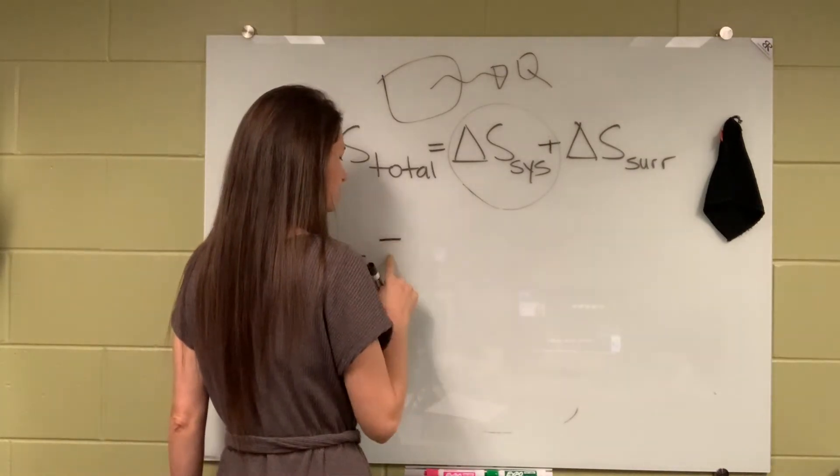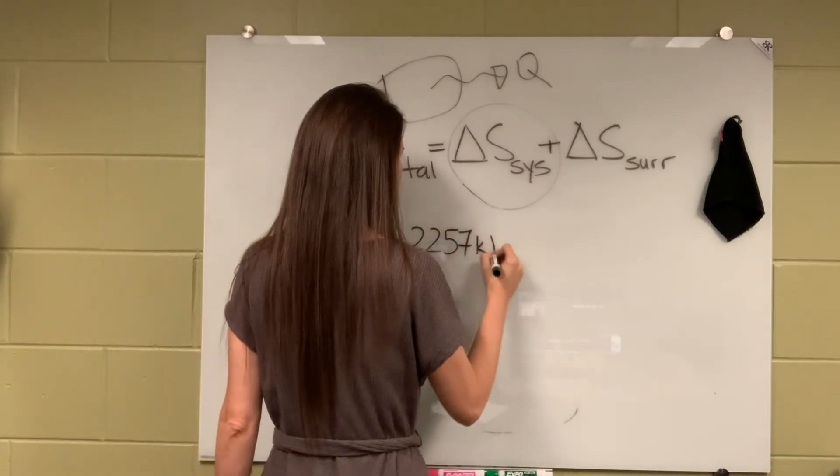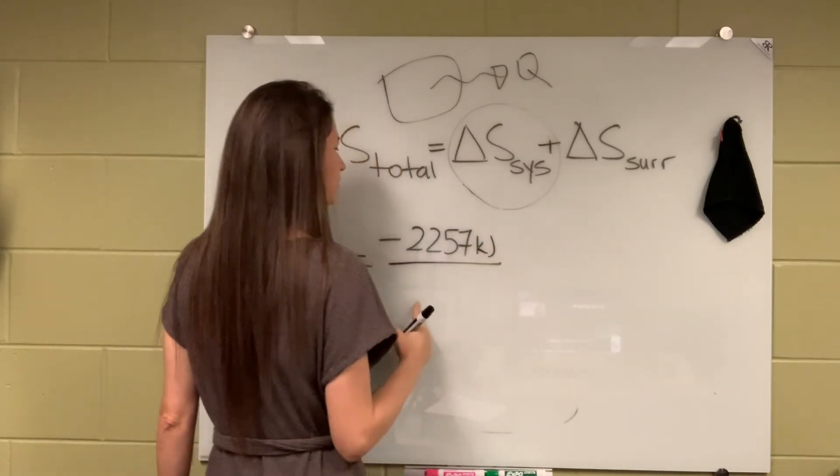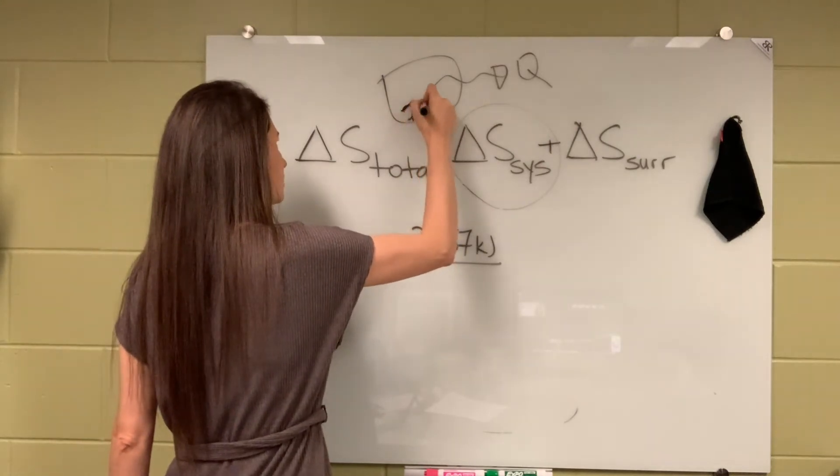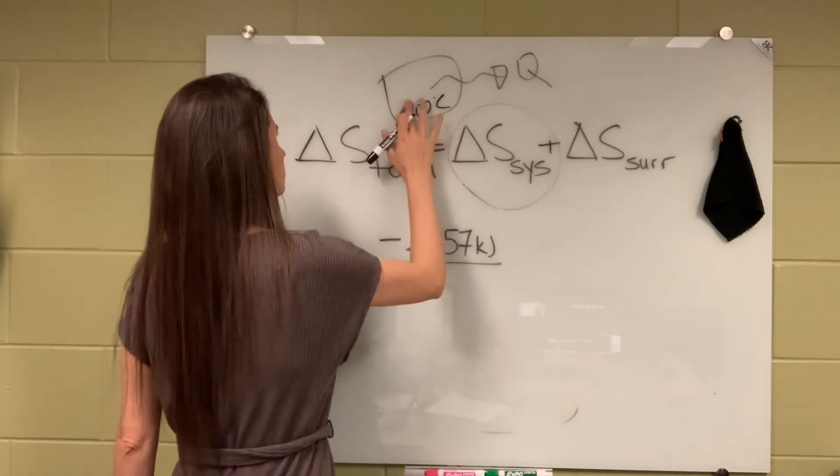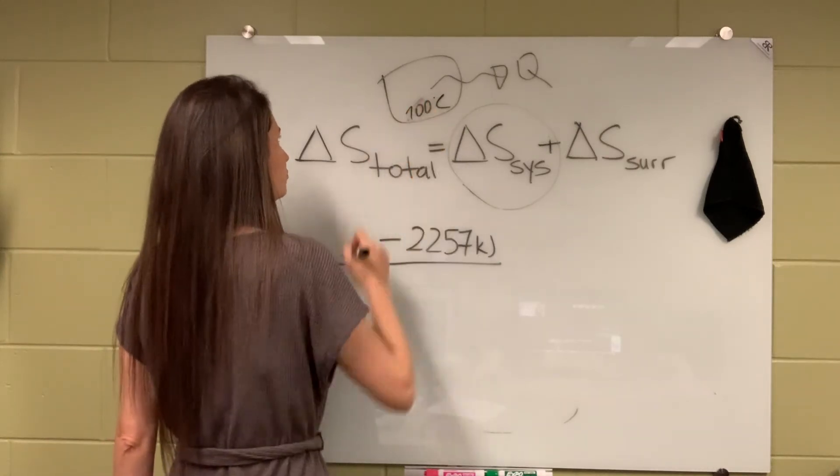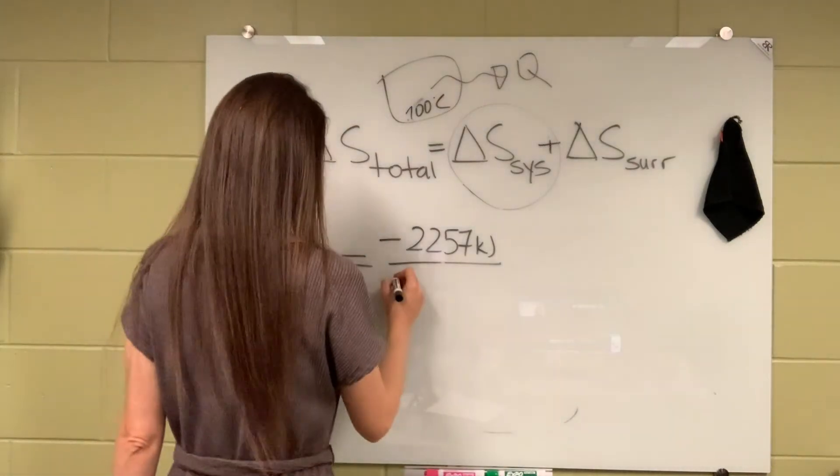Therefore, minus negative 2257 kilojoules per kelvin. But the system's temperature was 100 degrees C. 100 degrees C but I need to write it in terms of kelvin, so 100 plus 273 kelvin.